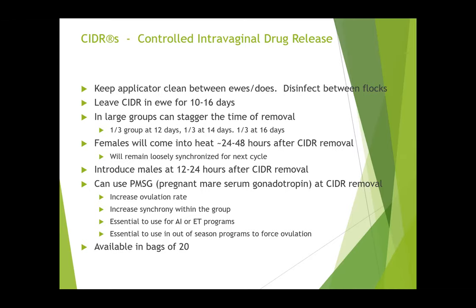CIDRs can be put in for 10 to 16 days — you've got a range there. Some clients with large groups and limited rams will put them all in on the same day and then pull some every day or every other day. You've got a window of opportunity which means you can insert them all on the same day and divide groups for breeding as you pull them out. Generally speaking, in the normal season females come into heat 24 to 48 hours after CIDR removal. In my personal experience, if a ram with a marker harness has not marked a ewe within 72 hours of pulling the CIDR, she has not cycled appropriately off the CIDR and won't continue until her next cycle.